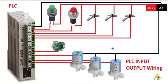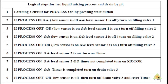Here we have the PLC input and output wiring. It shows start and stop push buttons, three level sensors, one motor output, and three valve outputs. The source/sink of the PLC is connected to ground. X0 is connected to the start button, X1 to the stop button, X2, X3, and X4 are connected to the three level sensors. On the output side, Y0 is connected to the motor, and Y1, Y2, Y3 are connected to valves V1, V2, and V3 respectively.